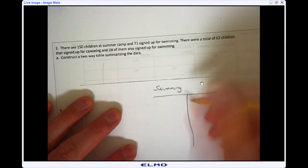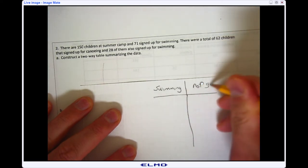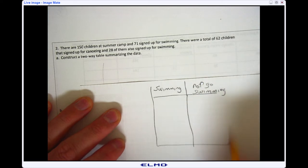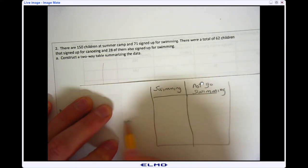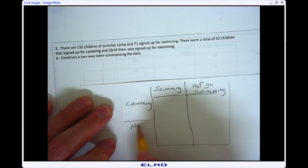Versus the people that did not go swimming. And then on this part of the table, I'm going to label it people that went canoeing and not canoeing.